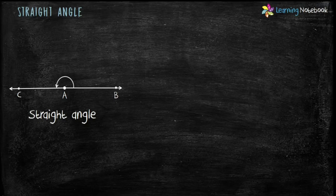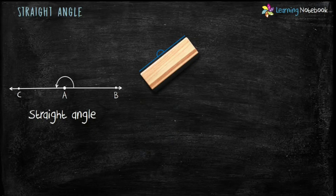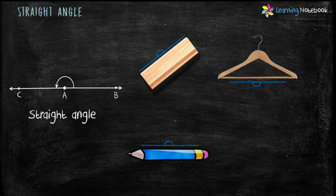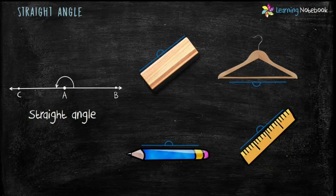Now let's see some real life examples of straight angle. First is a duster — edges of a duster make a straight angle. Second is a cloth hanger. Third is a pencil. Fourth is a ruler. All these examples make straight angles as shown here.